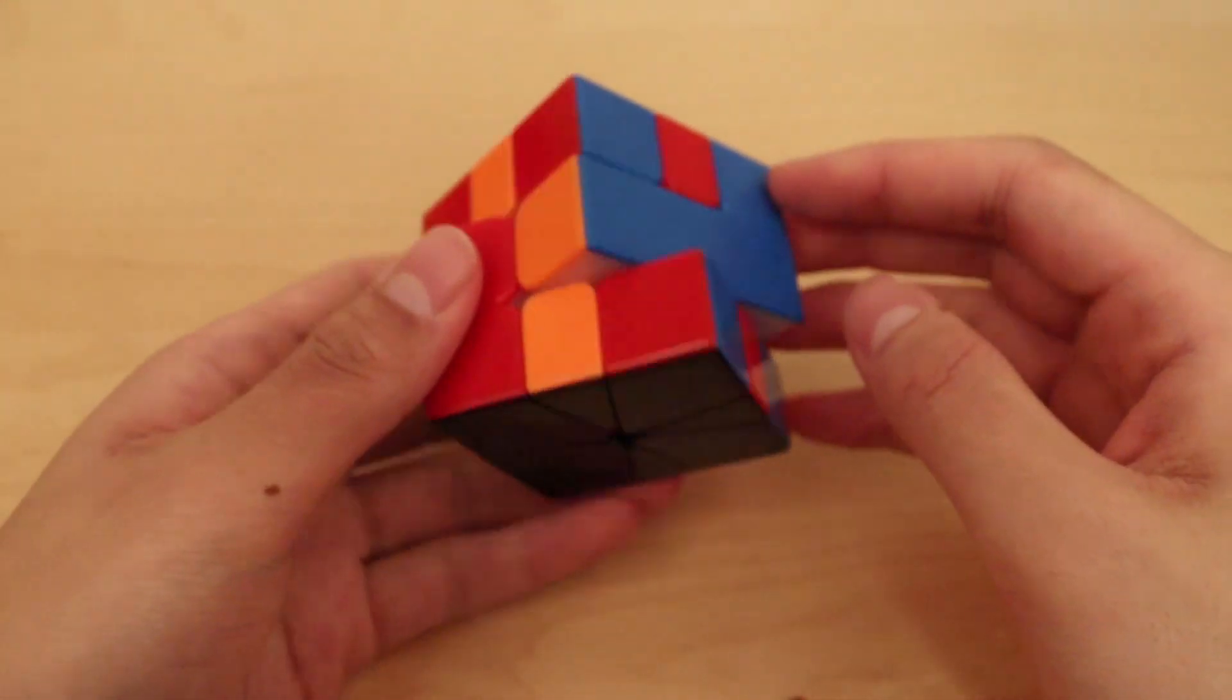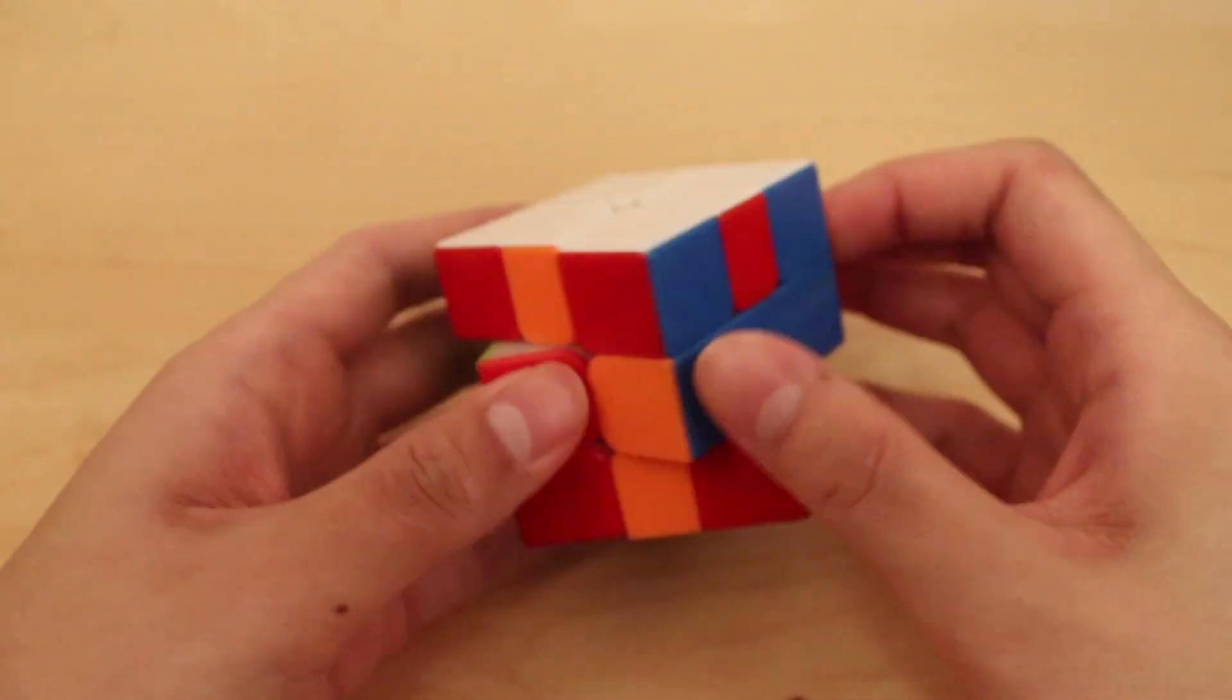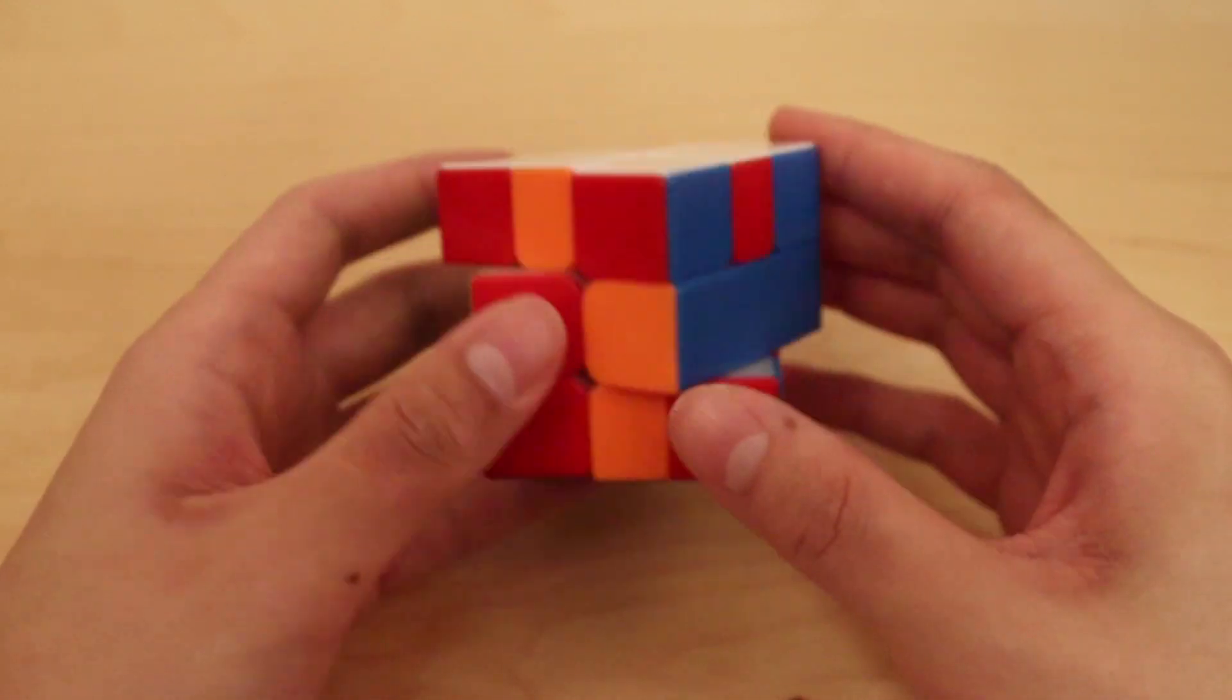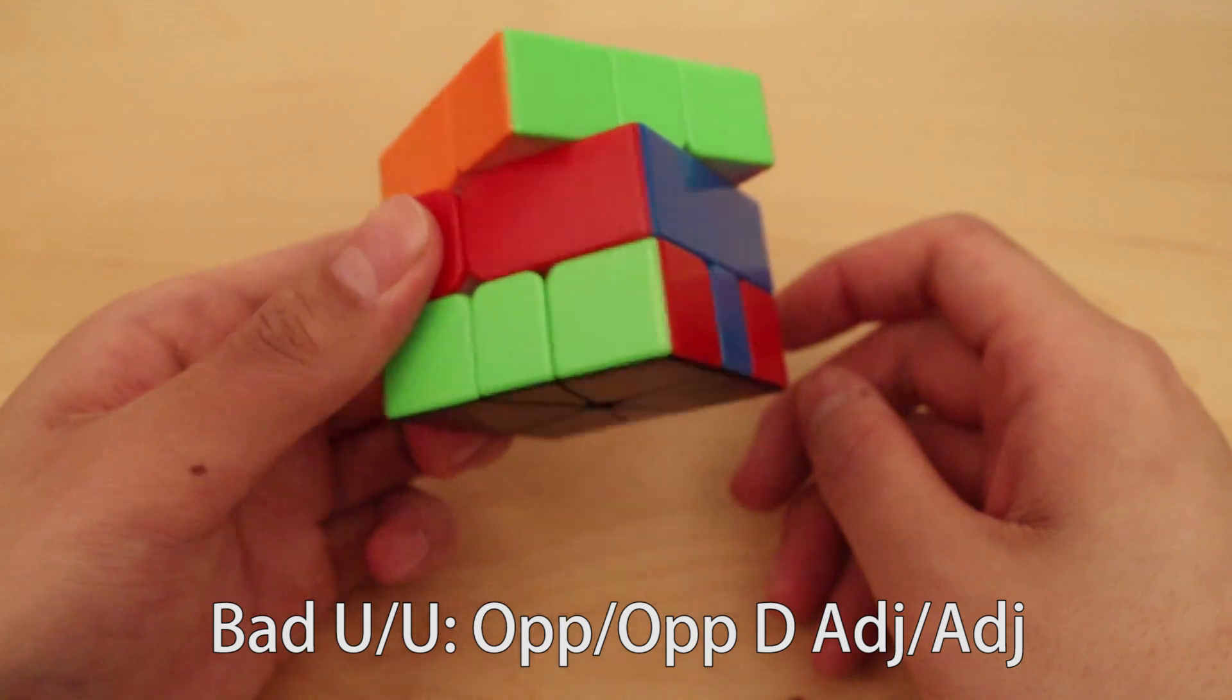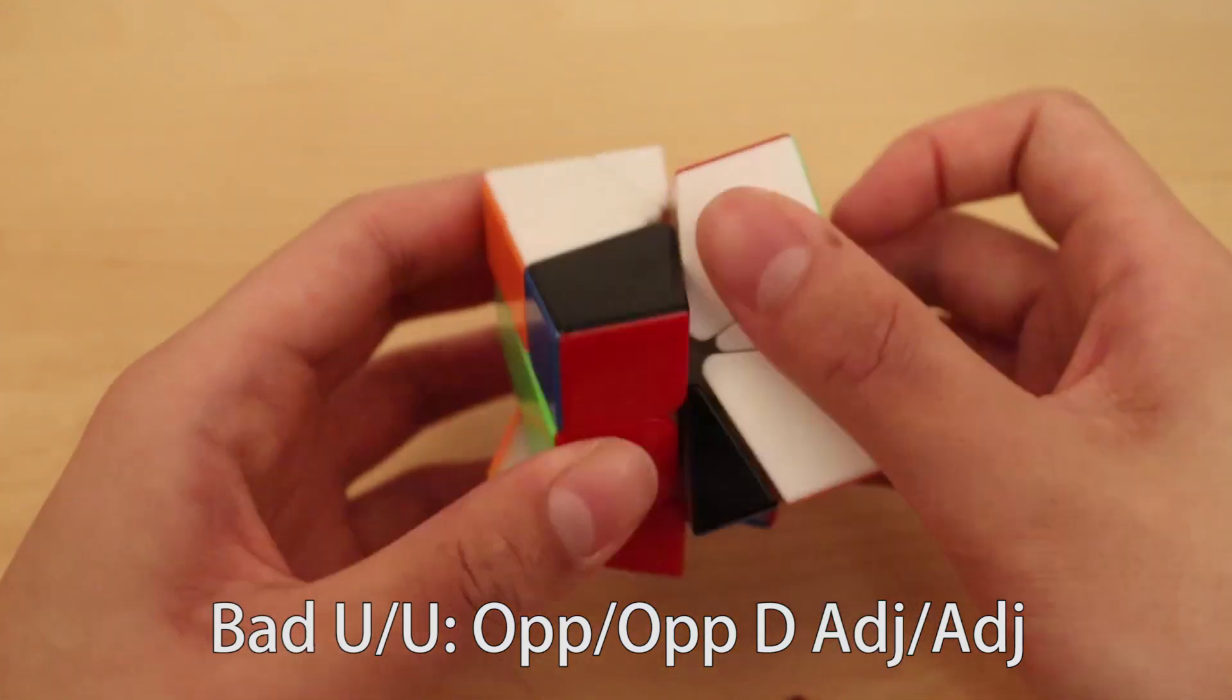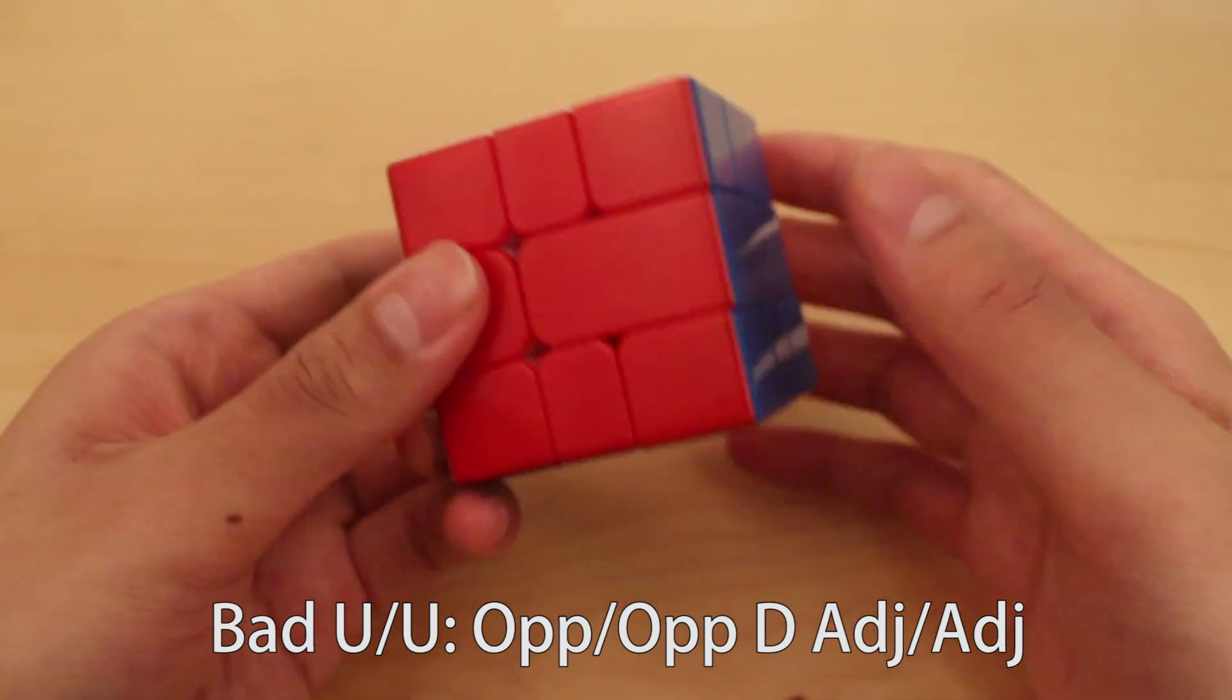Here's the W-perm. This one's the bad one. You can't actually cancel anything for this one. So for this one, I would do something like op-op here, and then edge-edge from the back. Two algs, but still is optimal.